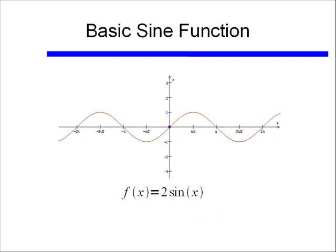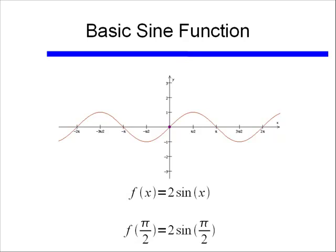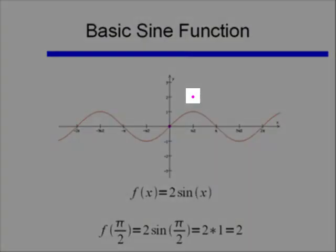Let's start with the example 2 times sine of x. If I look at the first point at x = 0, f(0) = 2 times sine of 0, or 2 times 0, which is 0 — so that point doesn't change. At π/2, f(π/2) = 2 times sine of π/2. Sine of π/2 equals 1, so this becomes 2 times 1, which equals 2. So for 2 times sine x, the point at π/2 is now equal to 2.